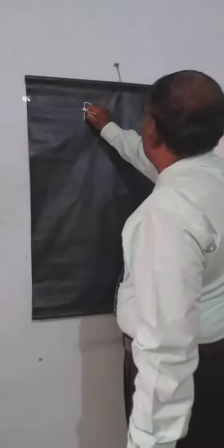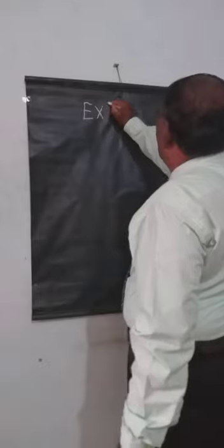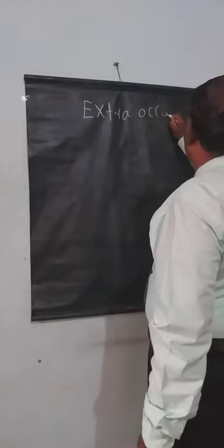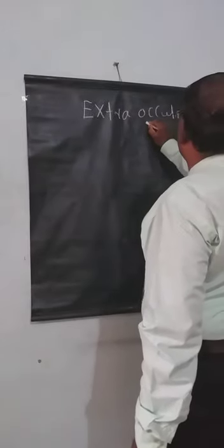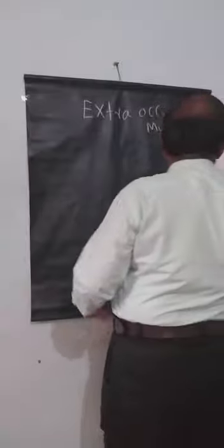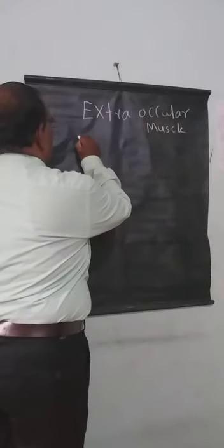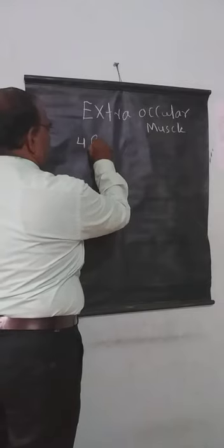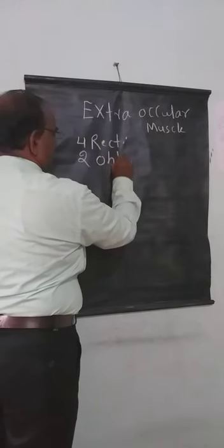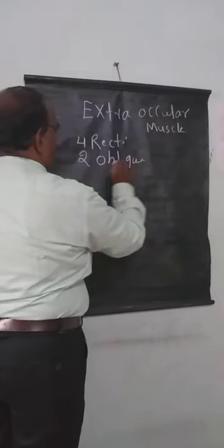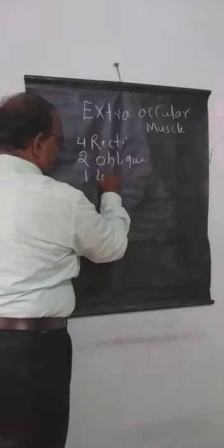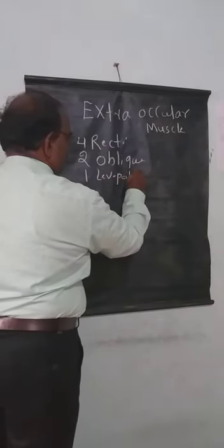Today we will see about extra-ocular muscles. These are: four recti, two obliques, and one levator palpebrae superioris.